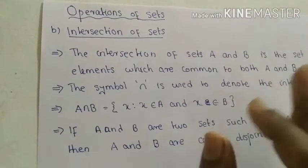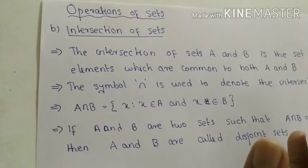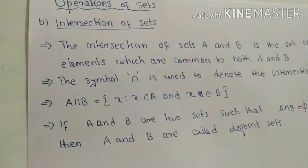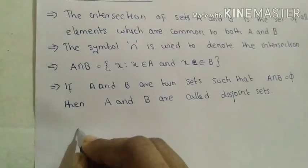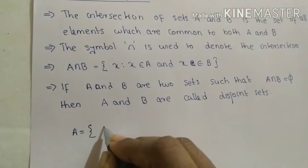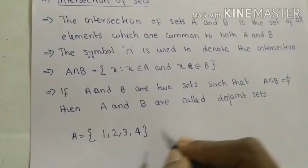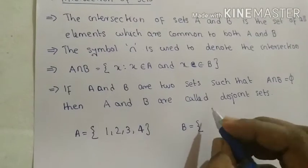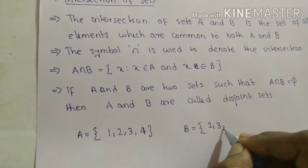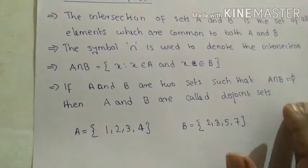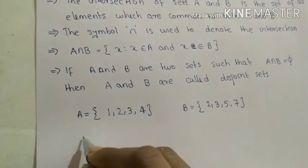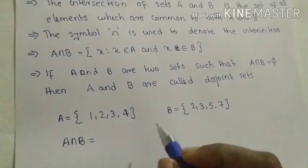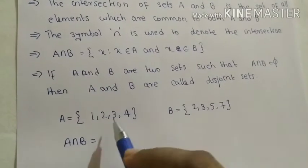So the intersection of sets A and B is the set of all elements which are common to both A and B. Let us consider set A is the set containing the elements 1, 2, 3, 4 and set B is the set containing the elements 2, 3, 5, 7. We need to write A intersection B.